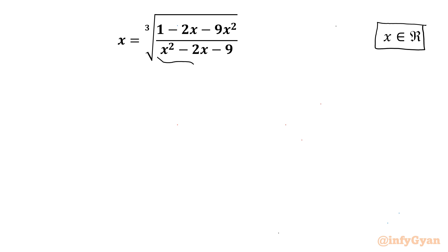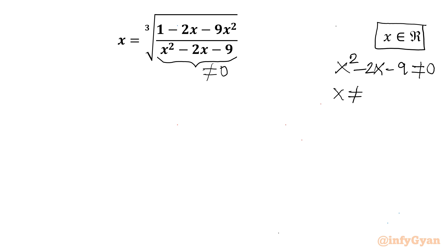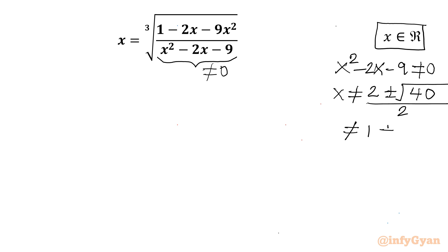Let's get started by noting the denominator cannot be zero: x² minus 2x minus 9 ≠ 0. Applying the quadratic formula, x cannot equal 1 plus or minus root 10. This is our restricted list.